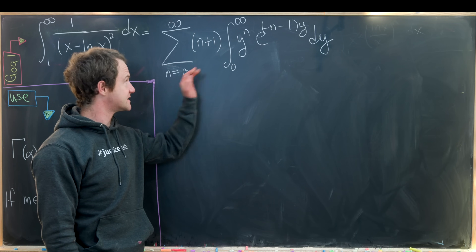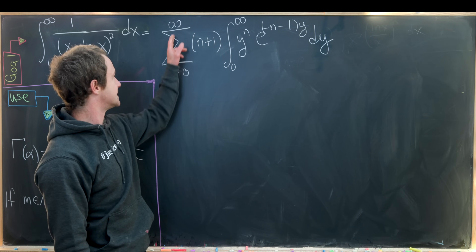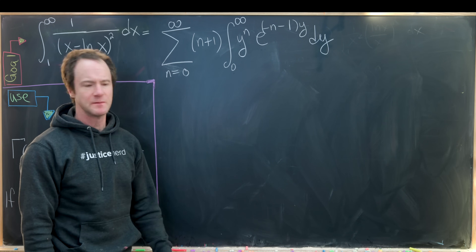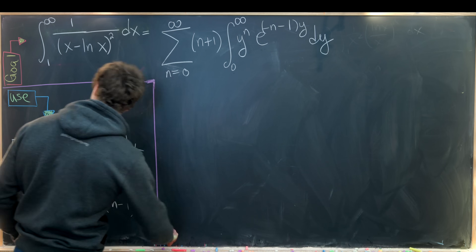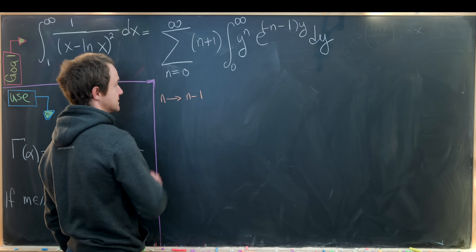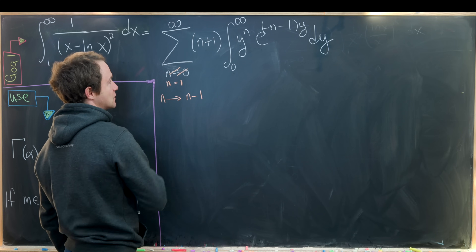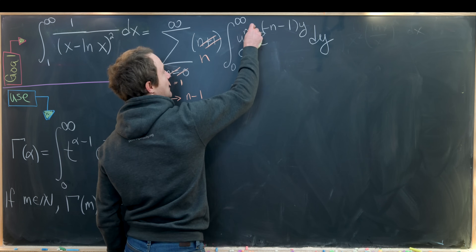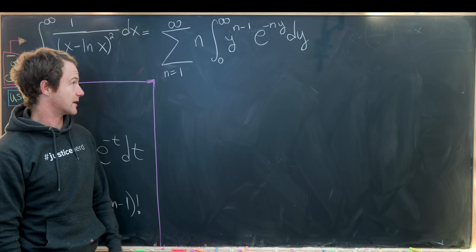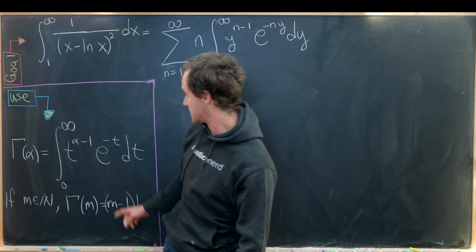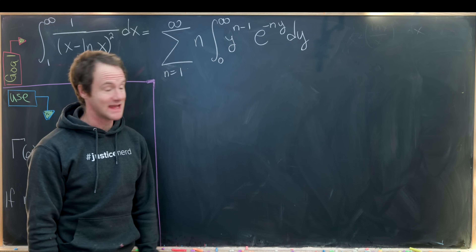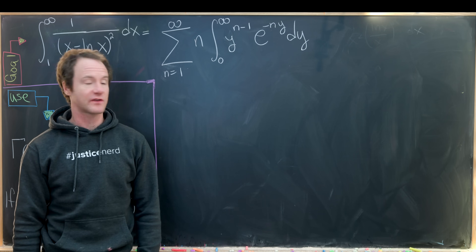We're left with the sum as n goes from 0 to infinity of (n+1) times the integral from 0 to infinity of y^n e^(−(n+1)y) dy. Re-indexing by replacing n with n−1 (so the sum starts at n=1), we get n times the integral of y^(n−1) e^(−ny) dy, which looks almost like the gamma function — we have y^(n−1) e^(−ny), with only the n in the exponent throwing it off.